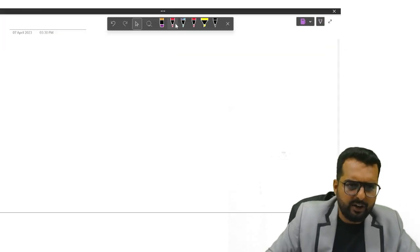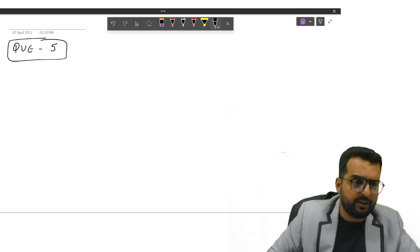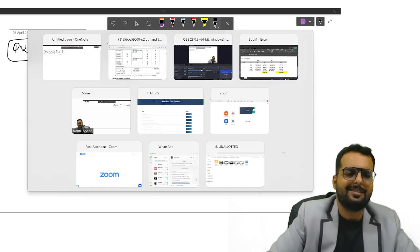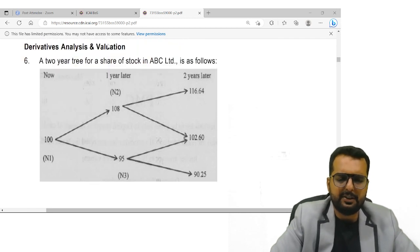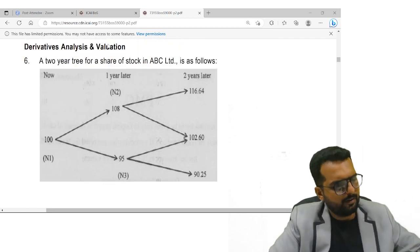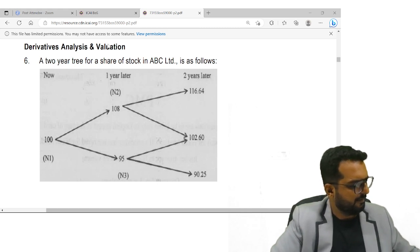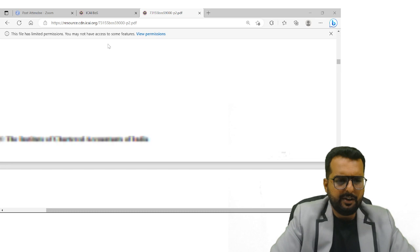Let us do question number 5, question number 6 sorry. Question number 6, derivatives. Please read through the chart. Okay, they have given a decision tree.